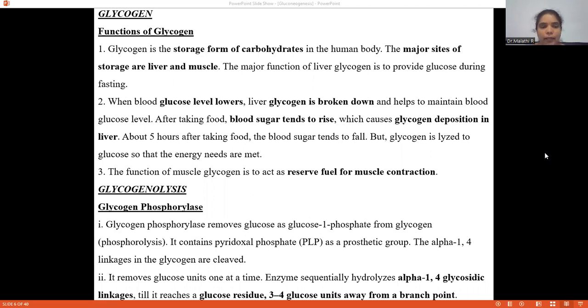The general functions of glycogen: Glycogen is a storage form of carbohydrates in the human body. The major sites of storage are liver and muscle.